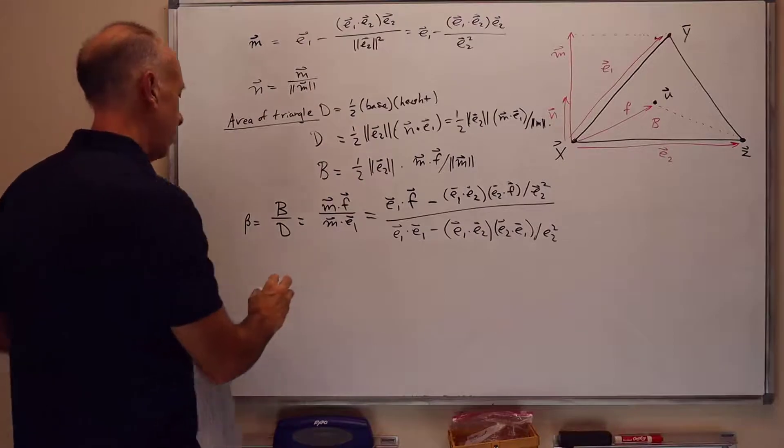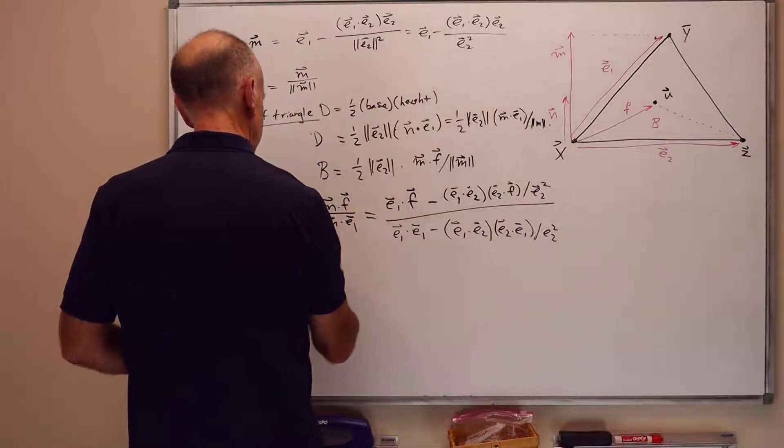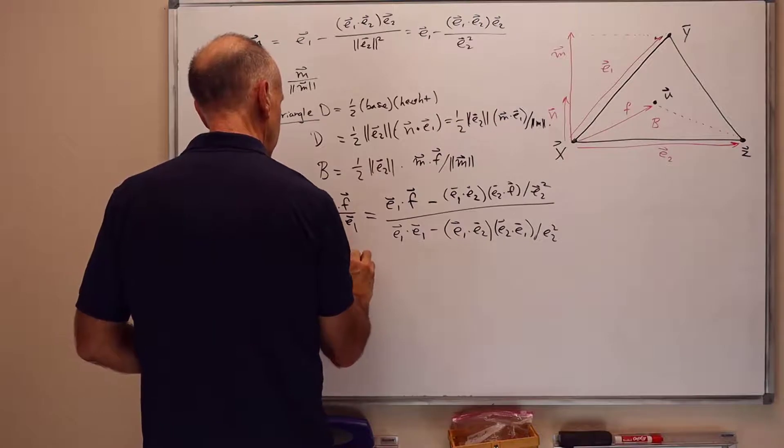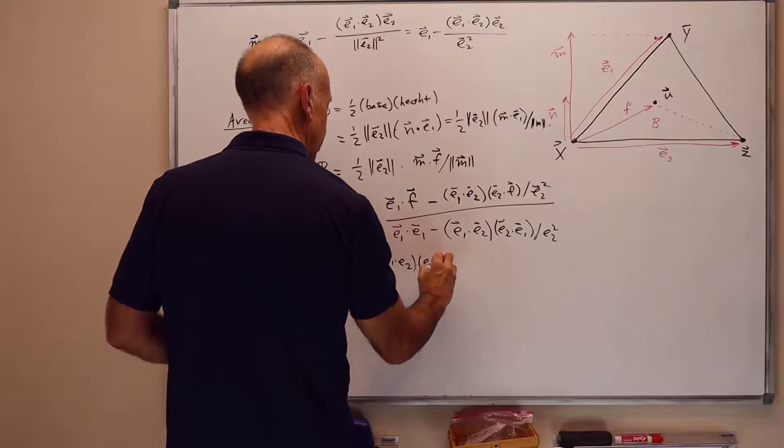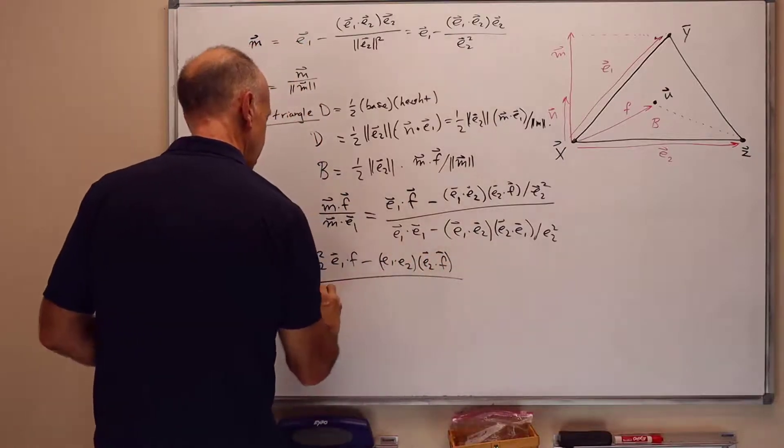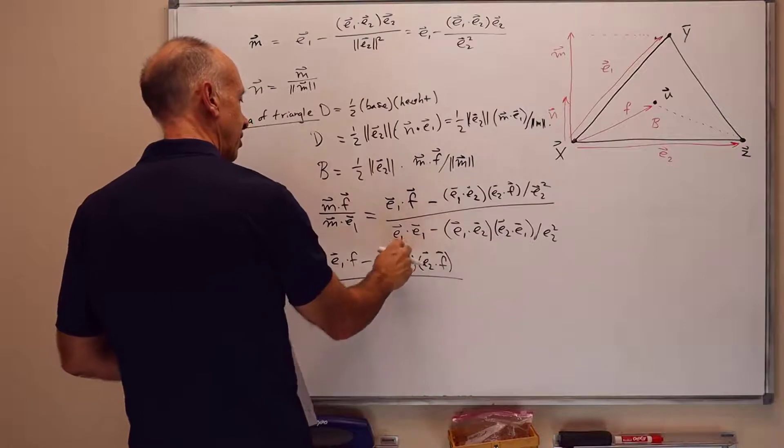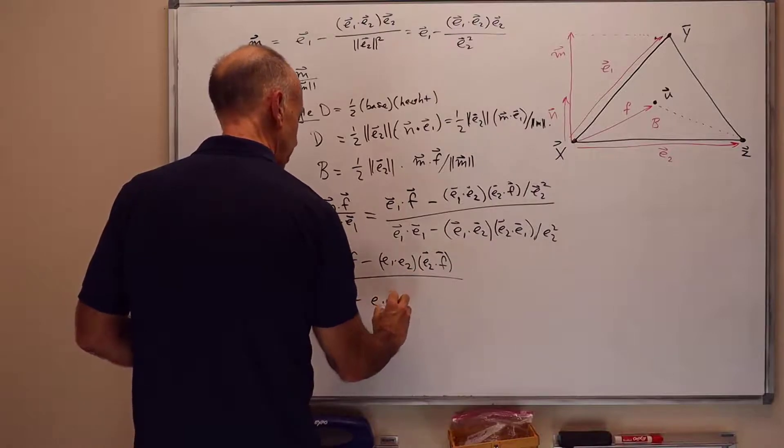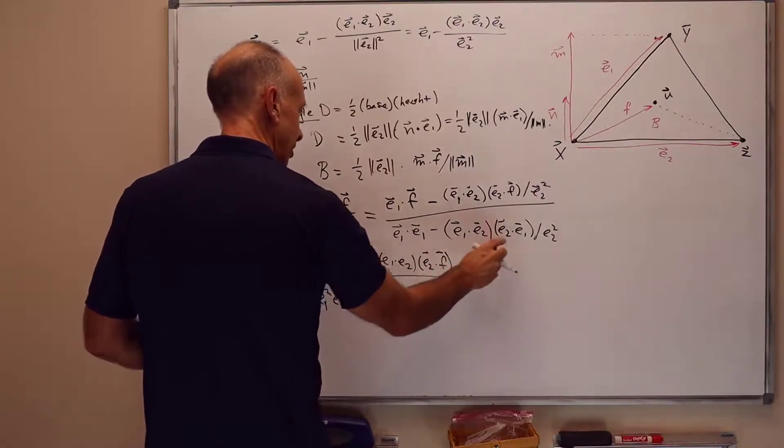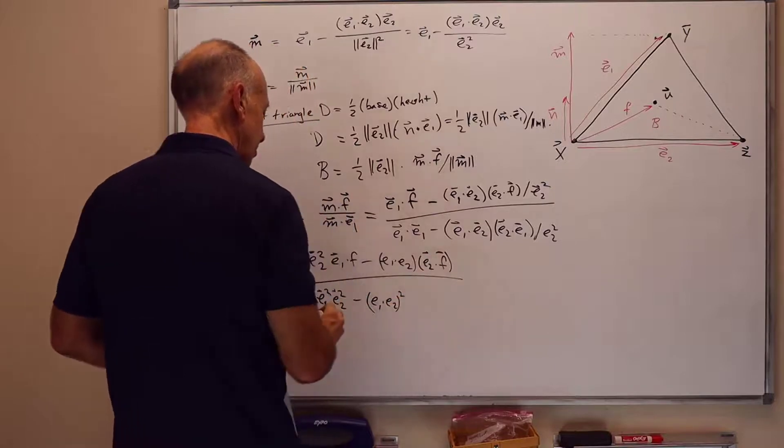Okay, so now let's simplify this up a little bit more if it's really simplification. Let's clear the e2 squareds out of the denominator. So I've got e2 squared, e1 dot f minus e1 dot e2 times e2 dot f over e1 squared times e2 squared. So here the e1 dot e1 is the same as e1 squared times e2 squared minus e1 dot e2 squared because e2 dot e1 is the same as e1 dot e2. And that's it for the denominator.